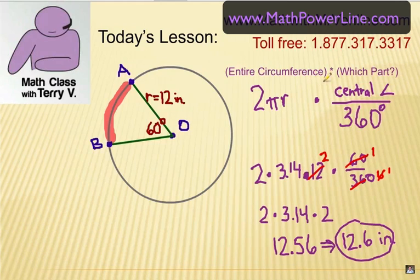Okay, so again, take the entire circumference, multiply by which part, which is the central angle divided by 360. Okay, fairly simple. Now, let's work through a couple of examples together.